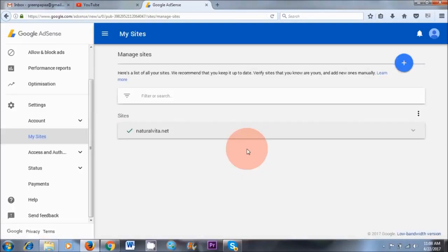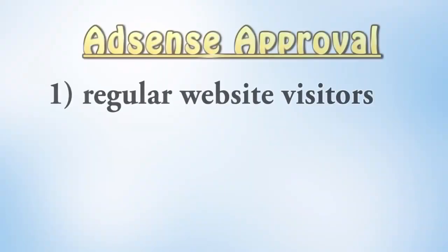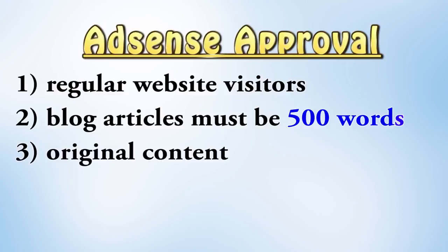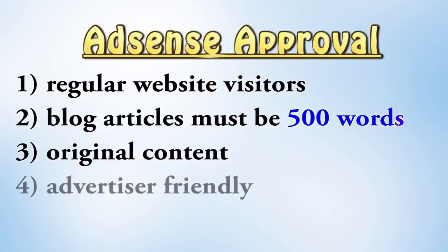There are some things you need to be aware of. Only submit your blog post to Google AdSense for monetization once you have around 20 to 30 people visiting your site on a daily basis. Number two: your blog articles need to be at least 500 words in length. If your blog articles are less than 500 words, you are most likely going to get disapproved. Also, all of your content needs to be original — if you've copied content, you'll likely get disapproved as well. Finally, your content needs to be advertising-friendly.